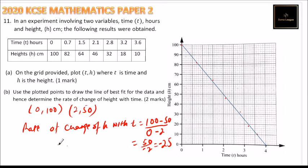So we can say it is minus 25 centimeter per hour, meaning that the height is reducing at the rate of 25. The minus means reducing, centimeter per hour. So that is how you get that. So that's how you solve that question and you'll be able to get three marks.